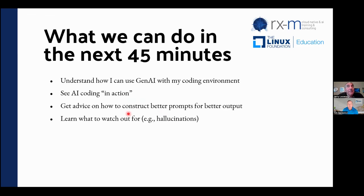What could possibly go wrong? Not all the code this thing generates works. A good question might be: if it's working so well, how come Google only generated 25% of their code with AI — why isn't it 75 or 90 percent? The answer is we're not quite there yet. For example, we could ask it to write code that instantiates bank accounts from a CSV file — an easy prompt.